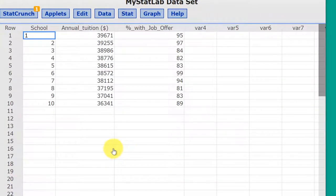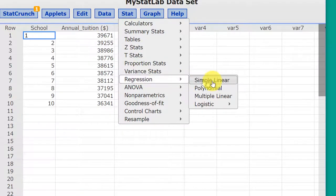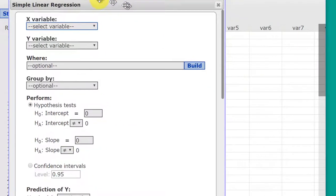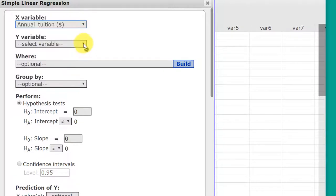Okay, I have the data open in StatCrunch. Remember that our tuition is our x value, that's our predictor variable, and our response variable is the percentage of students with job offers. We go to Stat, Regression, Linear Regression, and we're going to select our x variable, which is our tuition, our y variable, which is our job offer.